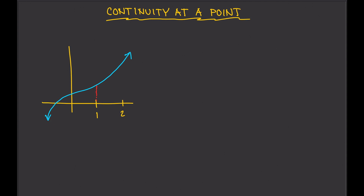But if there are holes or some jumps in there, some weird stuff going on, then the function is not continuous. In this case, this is continuous right here. If you look at x equals 2, you can just see that point right there, and there's nothing wrong, nothing weird going on. So this is continuous. This function defined by this graph is continuous at x equals 1 and x equals 2. And you can test at any point that you want.